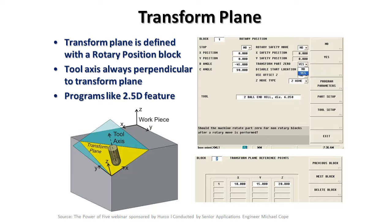In essence, we're doing the same thing we would do if we built a fixture to hold the part in this tilted orientation beneath the spindle on a three-axis machine.